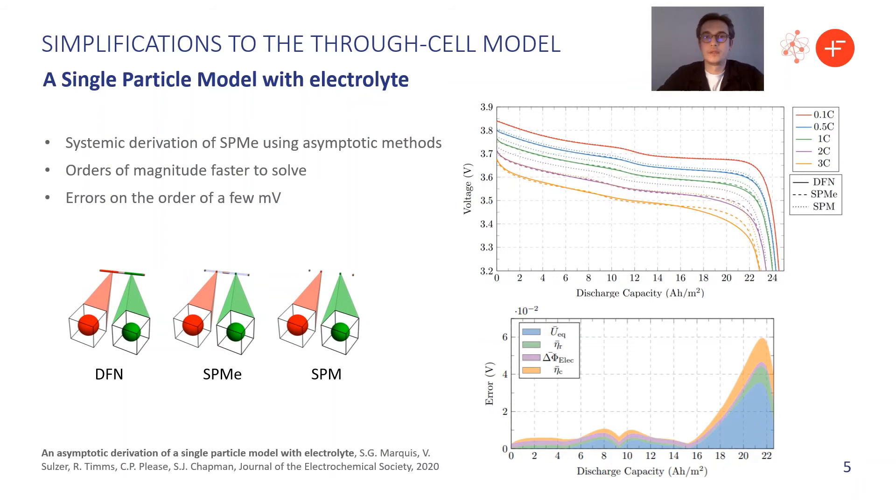Now let's take a look at simplifications to the through-cell model. Starting with the Doyle-Fuller-Newman model, we can use asymptotic techniques to derive a single particle model, and a correction to this, a single particle model with electrolyte effects. And this reduced-order model is orders of magnitude faster to solve than the Doyle-Fuller-Newman model, but gives errors on the order of a few millivolts.